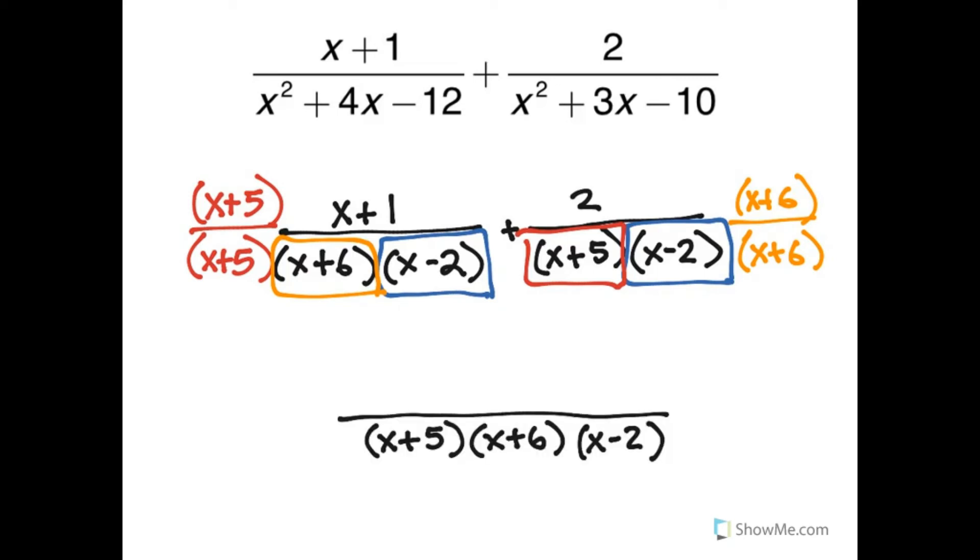Well, let's worry about the top. The first one, I have x plus 5 times x plus 1. So let's multiply that out. And when I do that, I get x squared plus 6x plus 5.